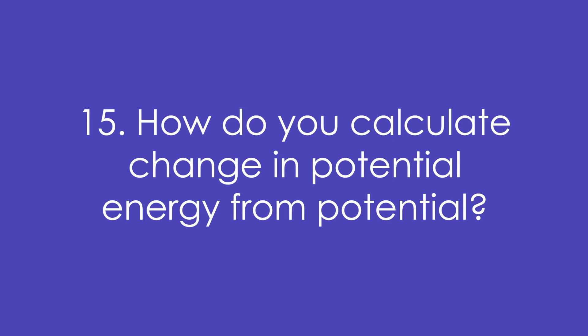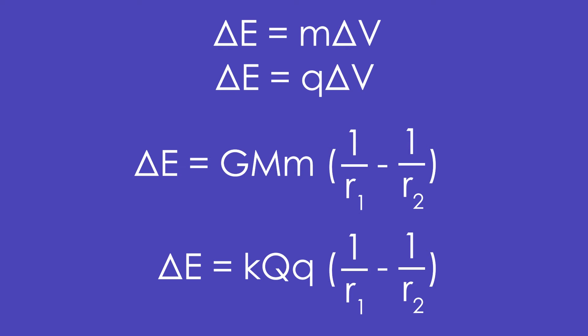Fifteen, how do you calculate change in potential energy from potential? All you do is multiply the change in potential by mass or charge. And for full equations, we can't stick the change in distance on the bottom. It has to be the full GMm over r minus GMm over r, or kQq over r minus kQq over r. And you can see that I've factorized here.